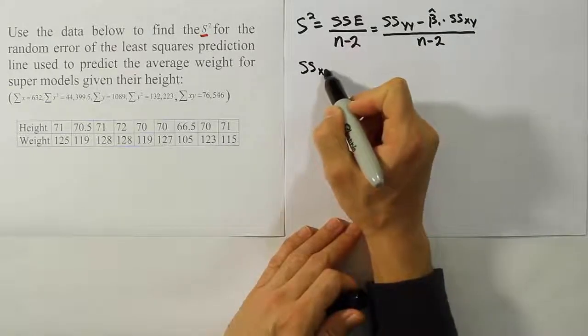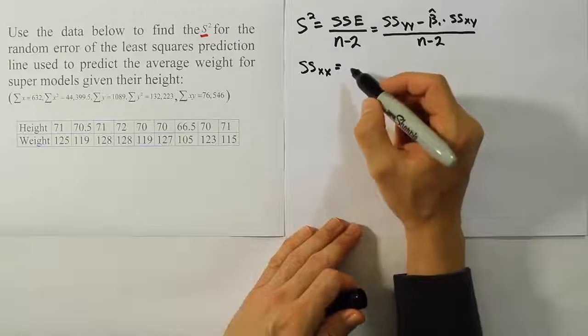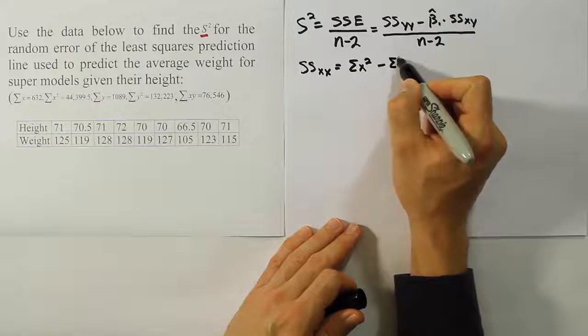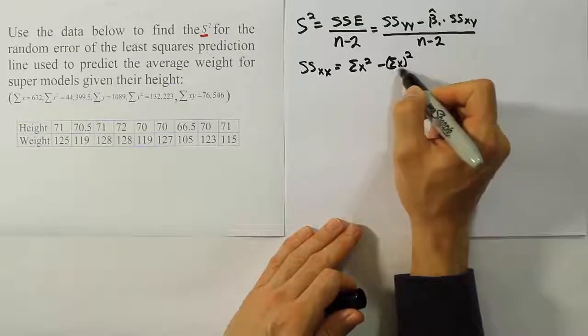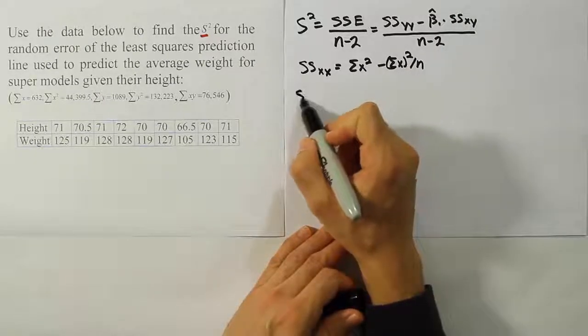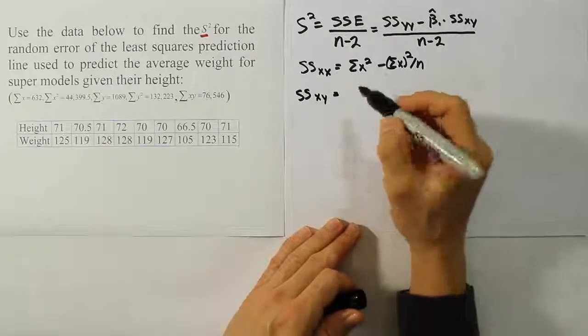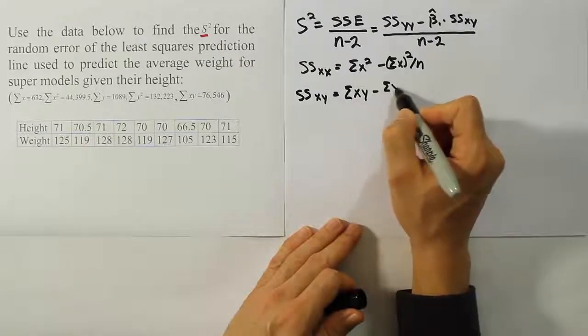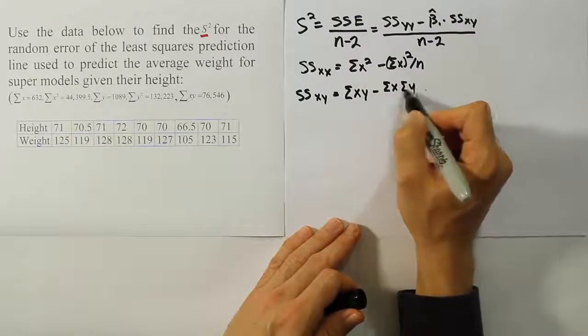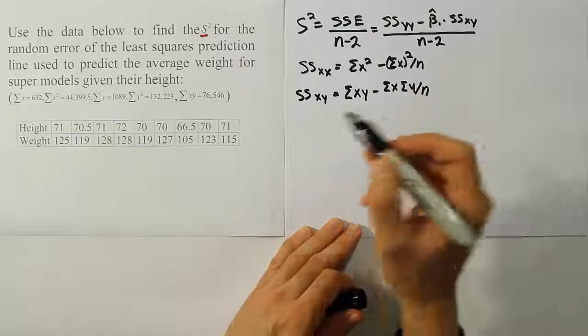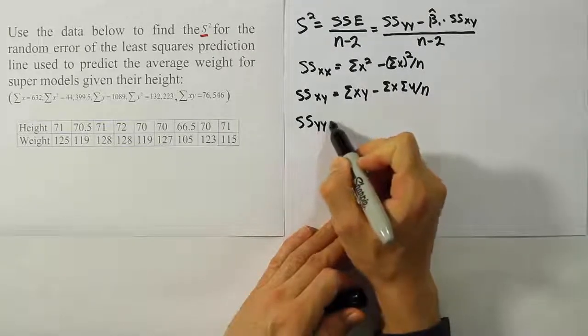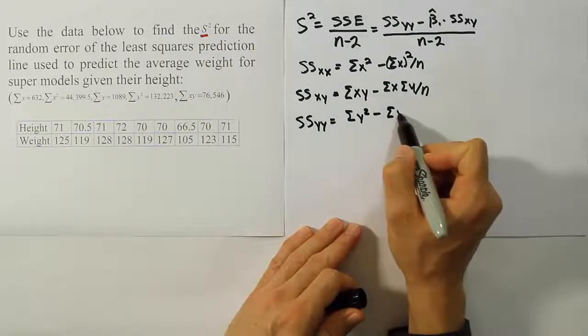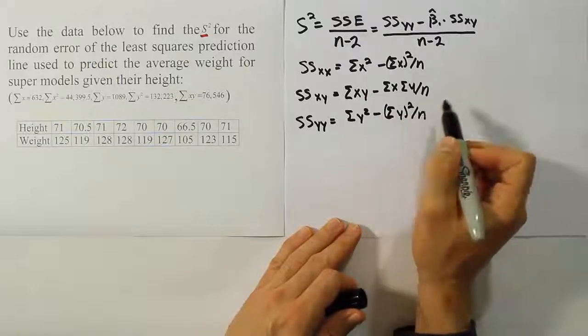Let's go ahead and calculate those one by one starting with SSXX. We're going to need the sum of X squared minus the summation of X quantity squared over n. Then we'll have the summation of XY, the mixed term, which is the summation of X times Y minus the summation of X times the summation of Y, again divided by n. And then we'll have finally the summation of YY, which is the summation of Y squared minus the summation of Y quantity squared divided by n.